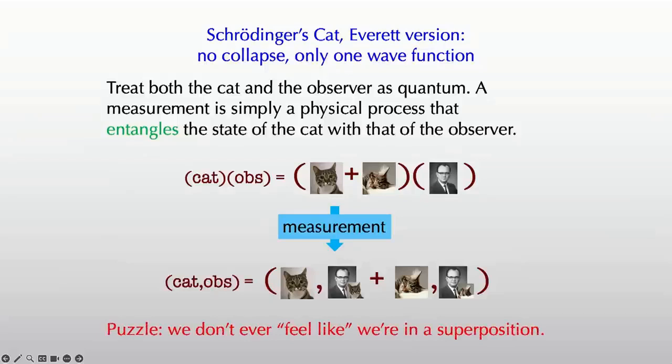The puzzle is, Niels Bohr would come along and say, this says I'm in a superposition of seeing the cat awake and seeing the cat asleep. And that has never happened to me. This is empirically wrong. When I measure things, I always feel like I've perceived a definite measurement outcome.